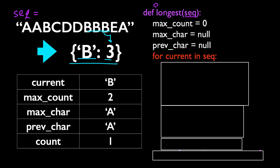First thing we need to do in this function is initialize some variables: max_count, max_char, and prev_char. It doesn't matter too much what we initialize them to. After that, we're going to run a for loop for each character, which we're going to call current, in seq.